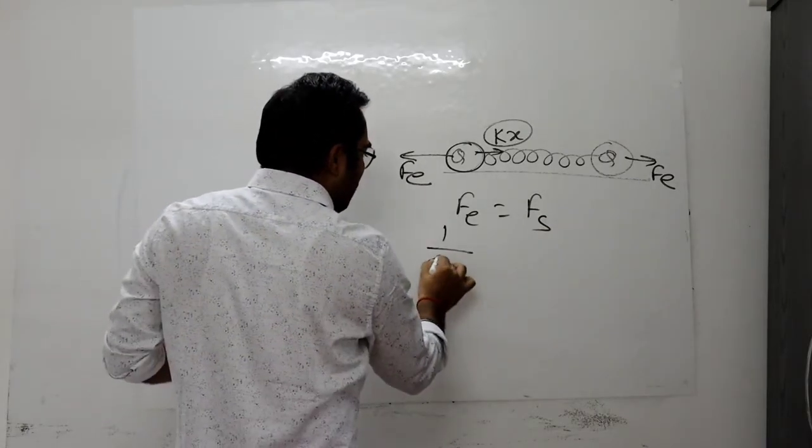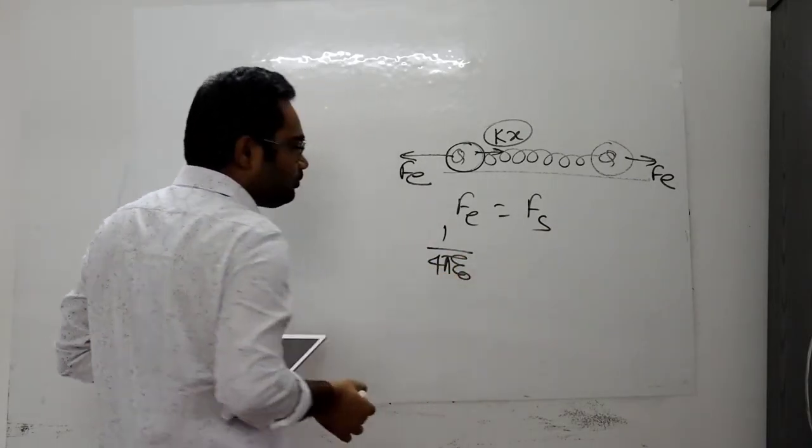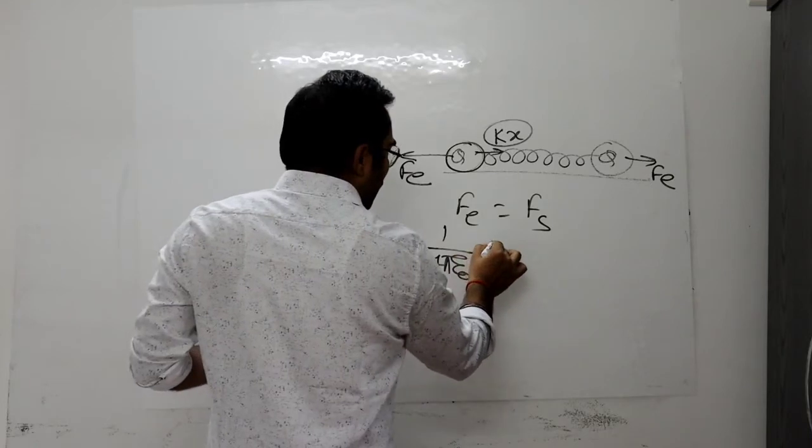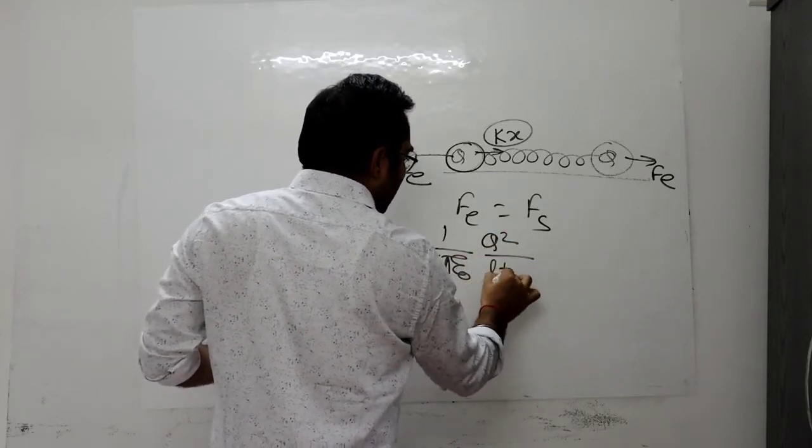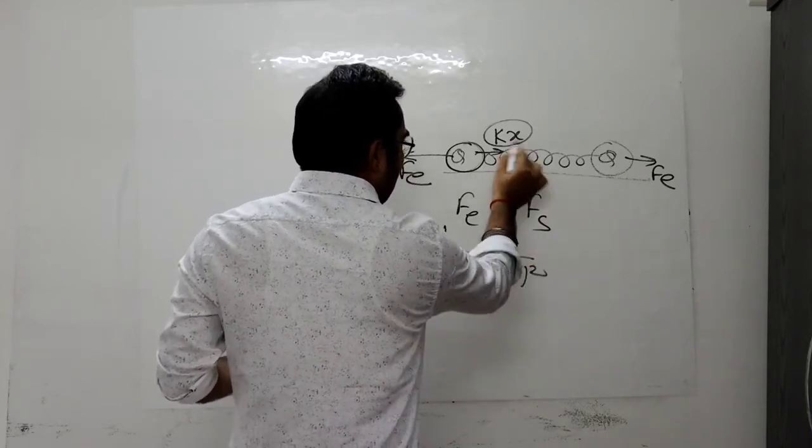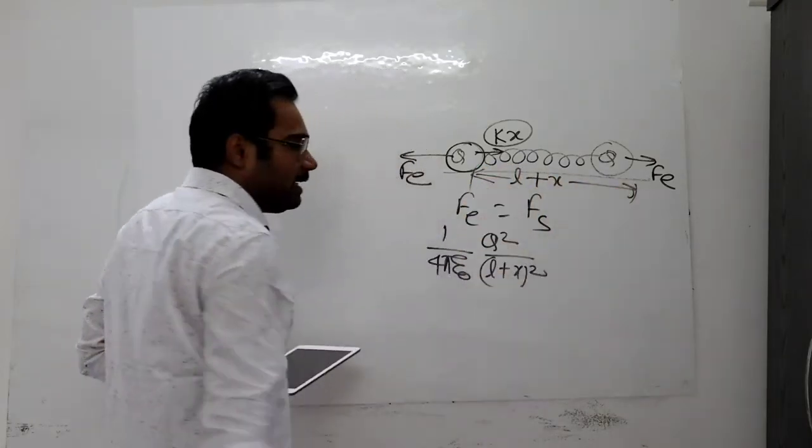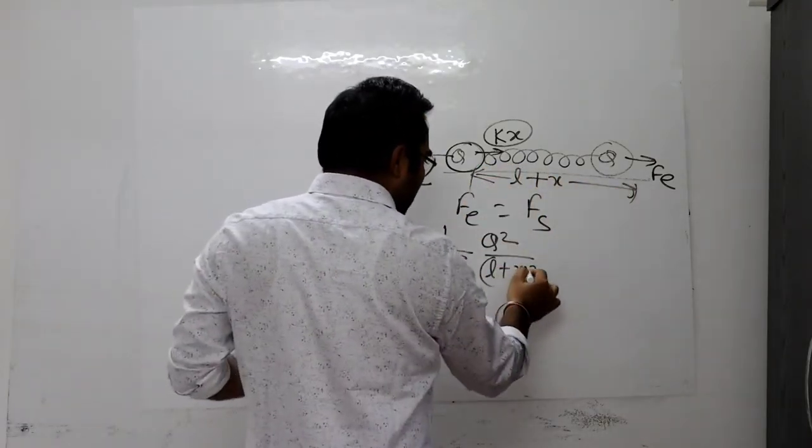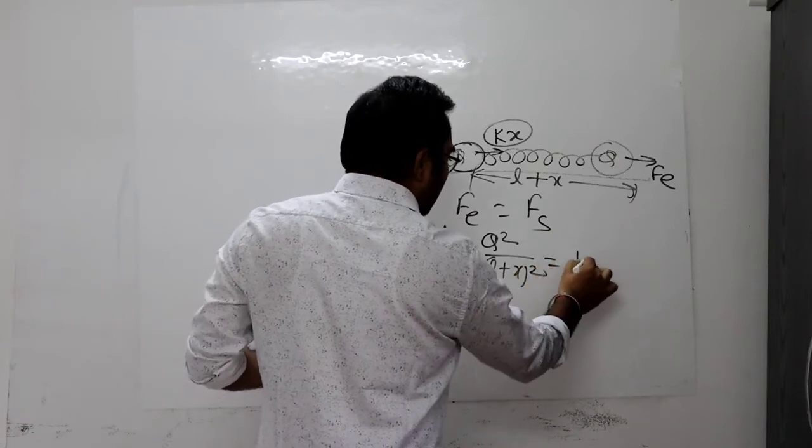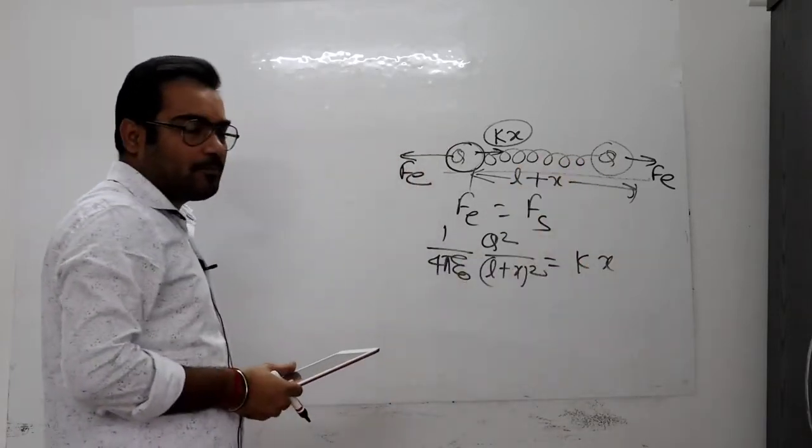It equals 1 by 4 pi epsilon naught, Q squared by L plus X whole squared. L is the natural length. This is X extension. This will be L plus X, right? This will be natural length. This equals spring force, which equals KX.